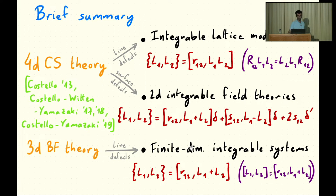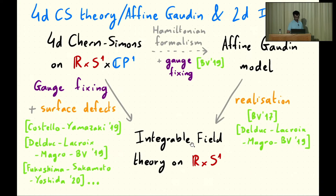What I want to tell you in this talk is how a similar story works for finite dimensional integrable systems with linear brackets for the Lax matrix, where the correct theory to start from is 3D BF theory. I want to explain in detail how this construction works — going from 3D BF theory by introducing line defects and gauge fixing — to obtain finite dimensional integrable systems, specifically ones which arise as realizations of Gaudin models.